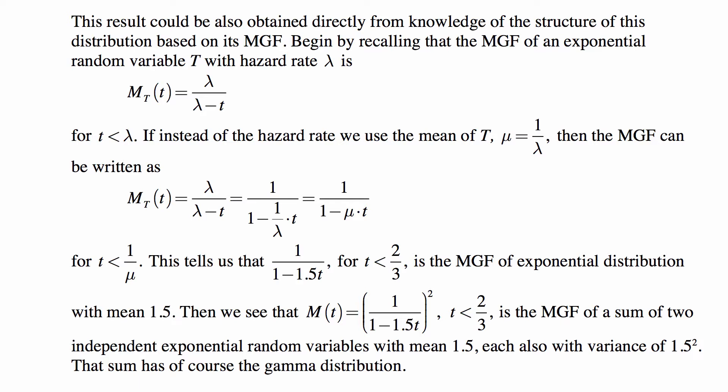From its moment generating function, which we write just as MGF. So let's first recall that the MGF of an exponential random variable T with hazard rate lambda is lambda/(lambda-t) for t < lambda.